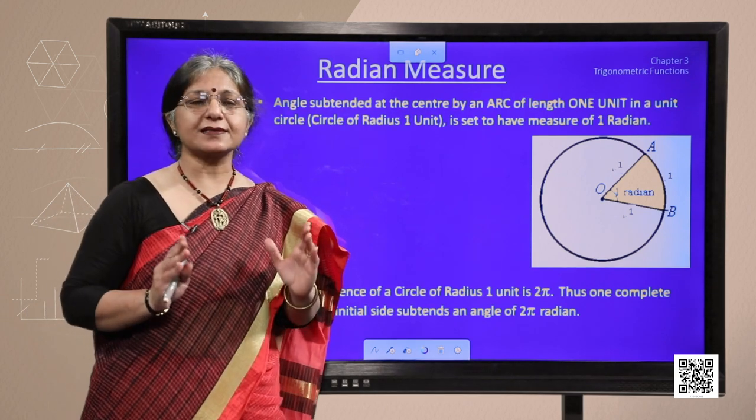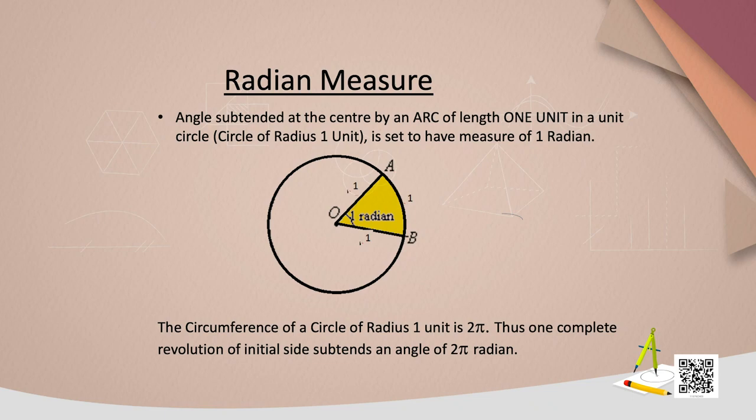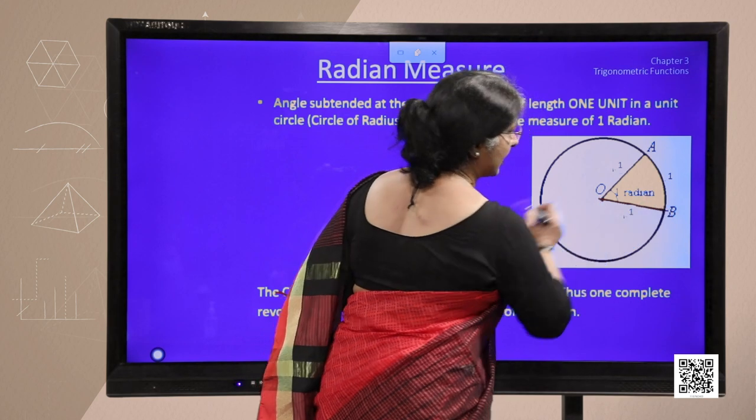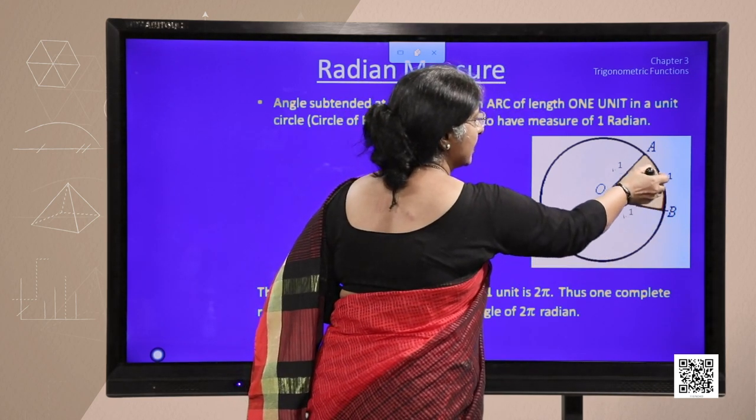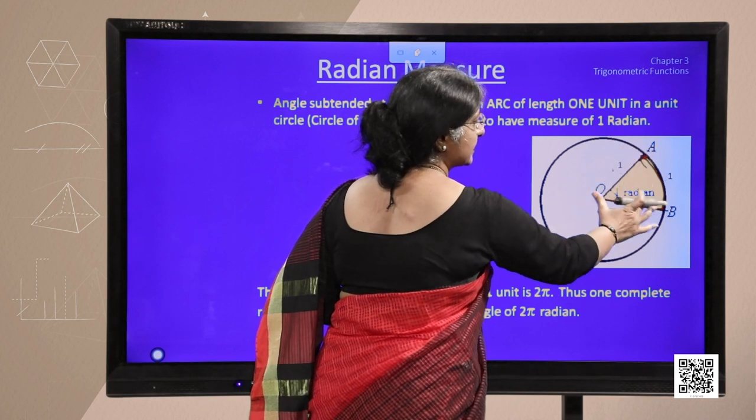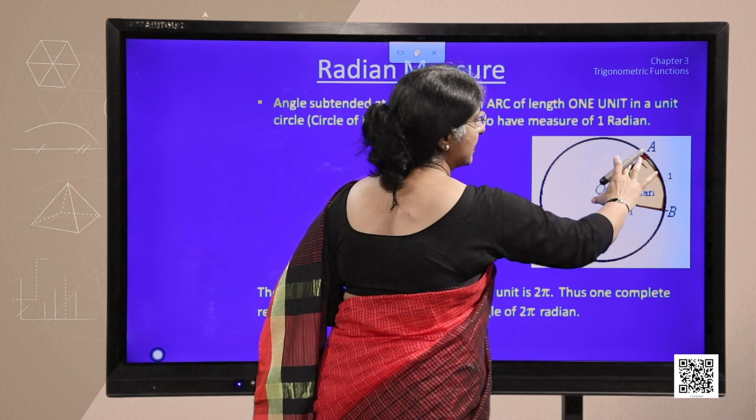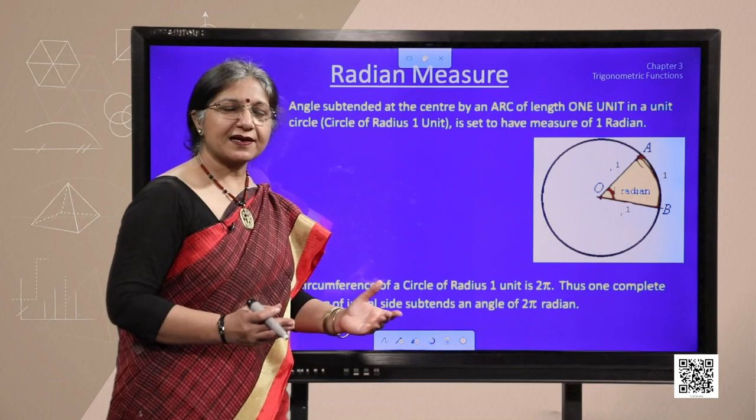Now see, here we have taken this radius as 1 unit and the same distance if the arc covers, exactly same as radius. Then this angle subtended by this terminal ray OA is called 1 radian.